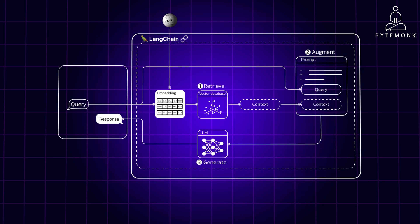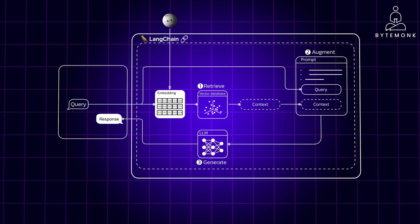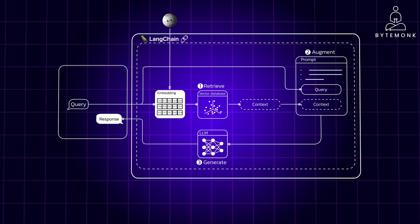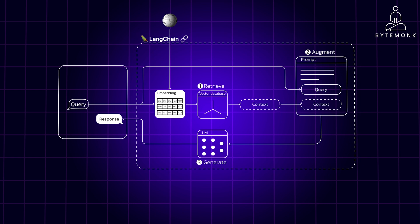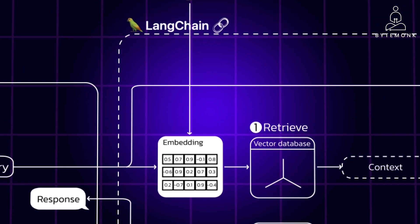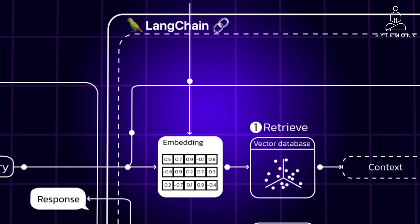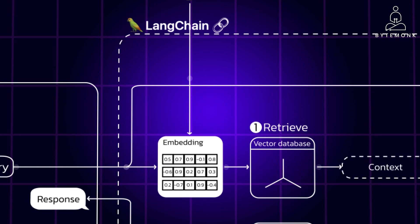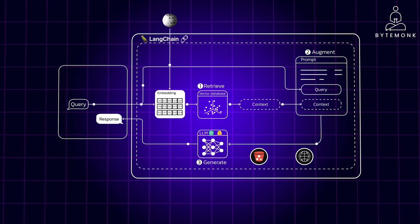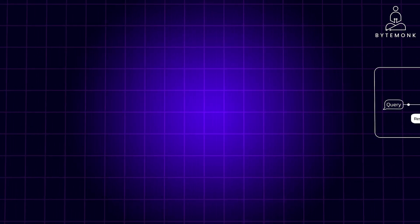LangChain is a comprehensive platform for natural language processing and plays a pivotal role in making RAG models accessible and efficient. It is a powerful framework for developing applications powered by LLMs such as OpenAI or HuggingFace. It provides a standard interface for chains, enabling developers to create sequences of calls that go beyond a single LLM call. LangChain also offers a wide array of document loaders that can fetch documents from various sources, including private S3 buckets and public websites, supporting types such as HTML, PDF, or even code.